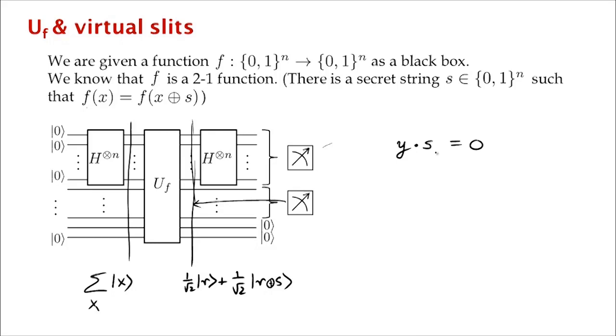Okay, so you can see Simon's algorithm as this very interesting double slit experiment. Okay, the slits are virtual and they reflect the input to the problem that we are trying to solve. And then when we look at the output, we look at where, when we do a measurement, we pick out one of the strings at which there's constructive interference and a random such string. But that random string yields a linear equation which gives us a constraint on the secret string s that we are trying to find. Okay, and these linear equations allow us to reconstruct s.